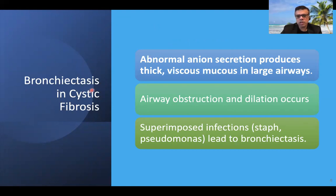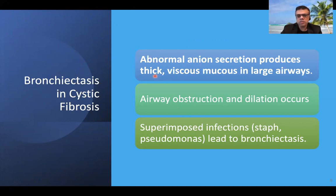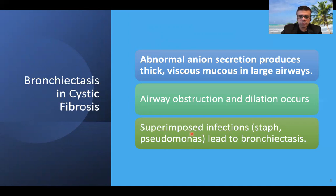In cystic fibrosis, there is an abnormal anion channel transport — specifically a defective chloride ion channel — that produces thick, viscous mucus in the larger airways. This causes airway obstruction and dilatation. Superimposed infections commonly seen are Staph and Pseudomonas, and these infections lead to bronchiectasis.